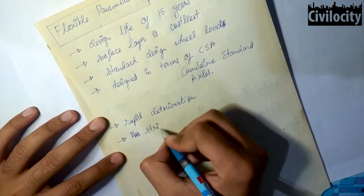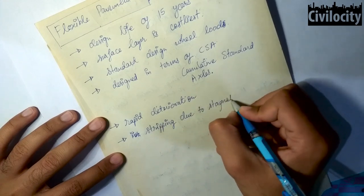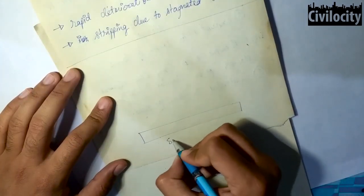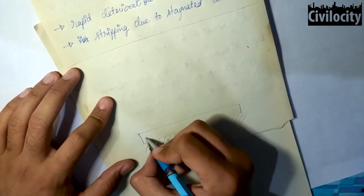Also it leads to rapid deterioration because the stripping due to stagnated water on the pavement increases. Now let's talk about the components of flexible pavements. I told you that flexible pavements are constructed in couple of layers.